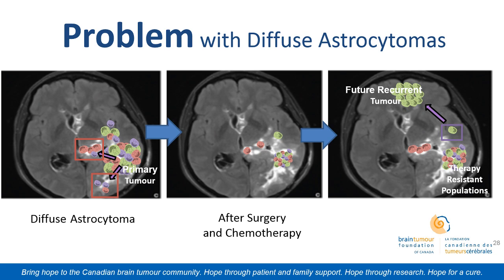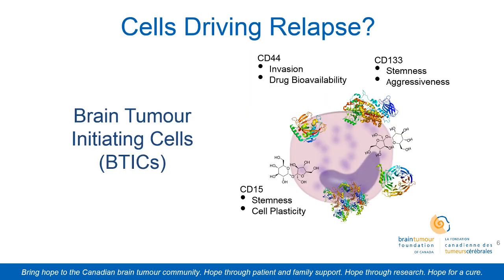From prior research, we know that brain tumor-initiating cells, or BTICs for short, are capable of tumor regeneration even post-therapy. These BTICs can be characterized and grouped by different cell surface markers — for instance, CD133, CD44, and CD15, two proteins and a carbohydrate respectively. From past research, we know that when these cell surface markers are present in cells, they show aspects like tumorigenic potential and therapy resistance.